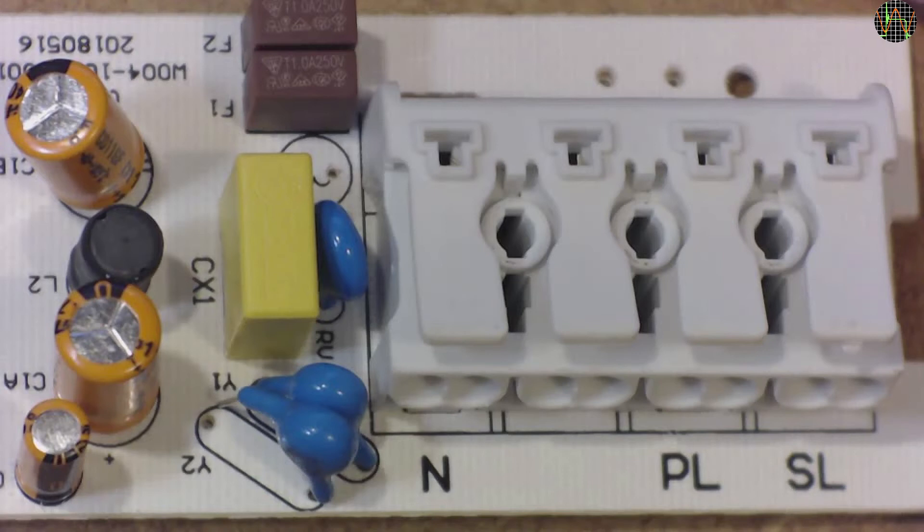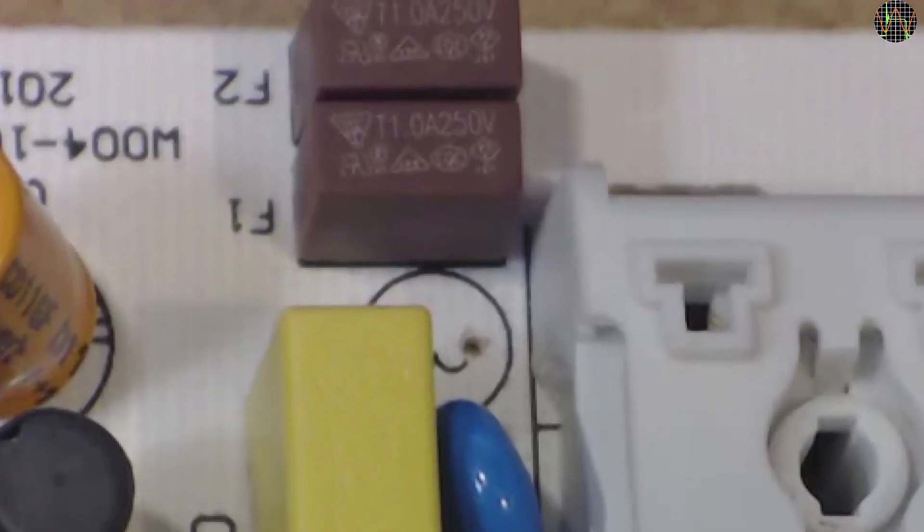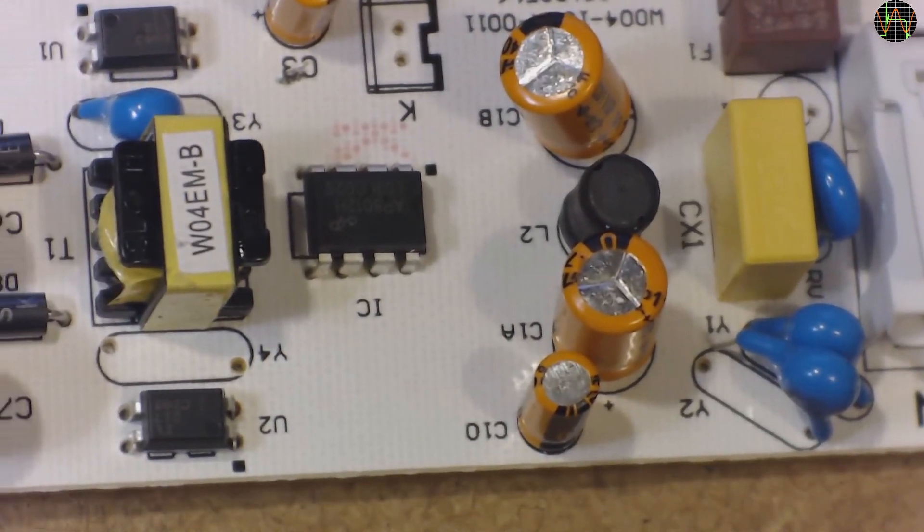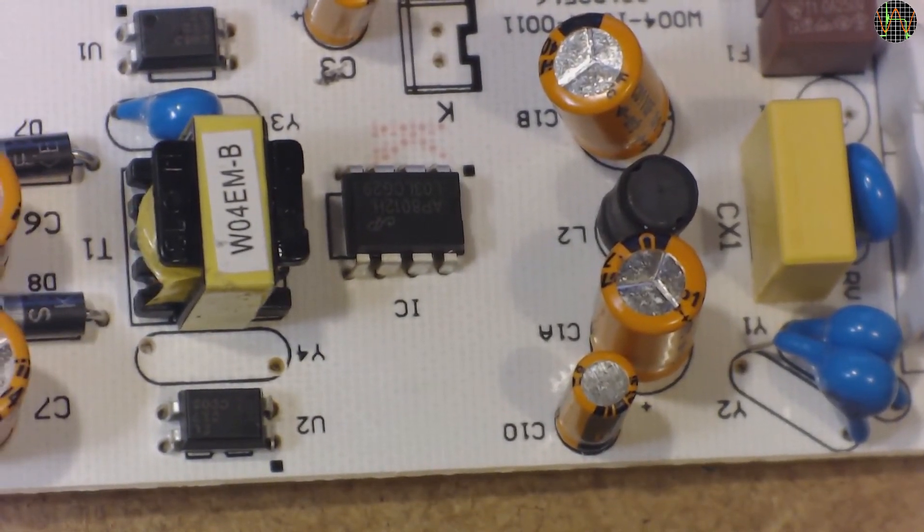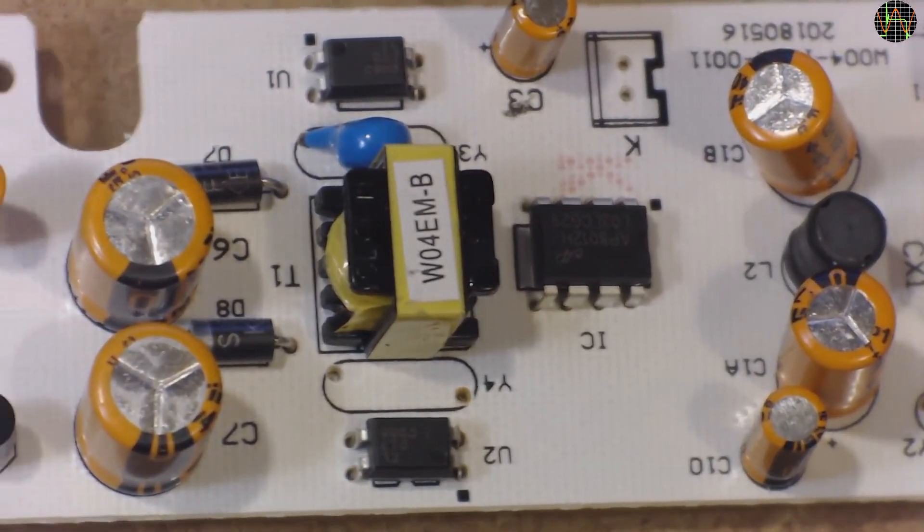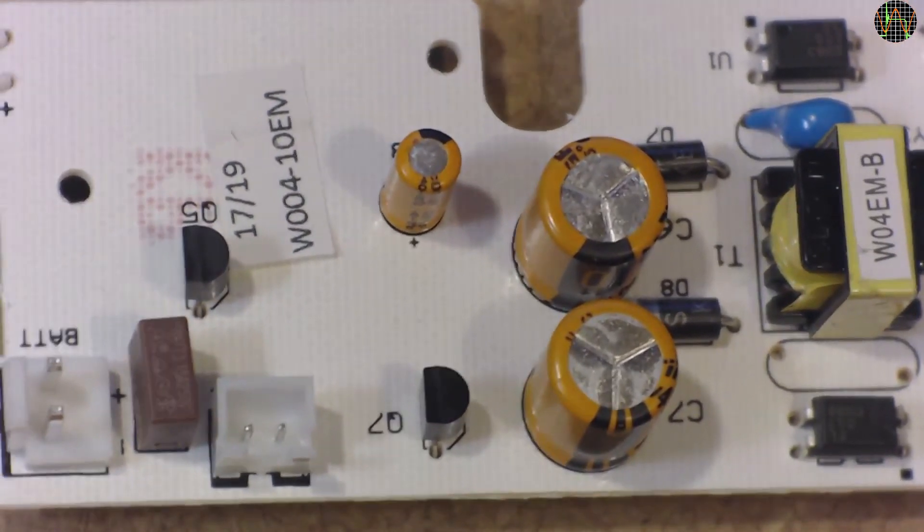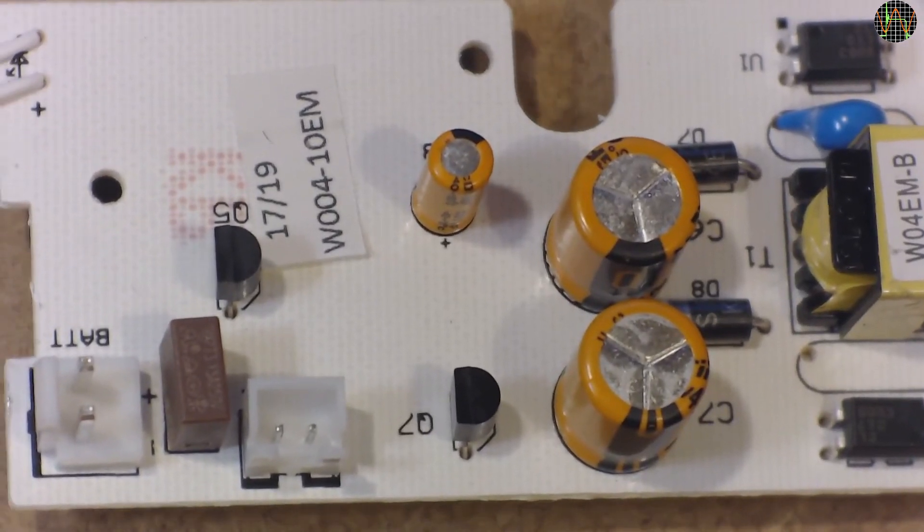Next we have the big mains terminal block. There are four connections: N for neutral, the PL connection is for permanent live while SL is for switched live. If SL is connected to live, the light turns on when mains is available. The unlabeled connection between N and PL is for earth. The two live inputs are separately protected by these fuses. Next to the transformer we have not one but two optocouplers which is a bit unusual. Also we have two big rectifier diodes and two big capacitors instead of the usual one of each. The rest of the board looks deceptively empty. There are just two transistors and the sockets for the battery and LEDs. And another fuse, this time for the battery.